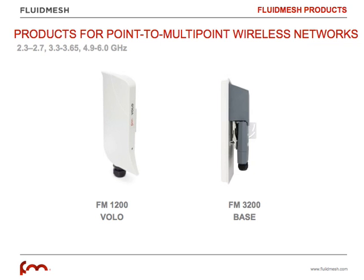FluidMesh provides multiple products to build point-to-multipoint networks. The FluidMesh 1200 Volo is a typical device used as a CPE — the device that goes in the field connected to your camera, remote sensor, or remote network. The FluidMesh 1300 Base is the device that goes at the center of the point-to-multipoint network and acts as a base station. It has a 120-degree wide antenna, making it ideal for mounting on top of a building and acting as the central collection point for the network.